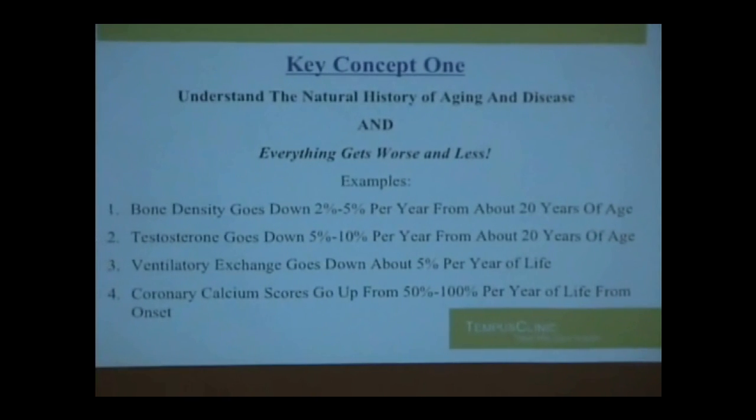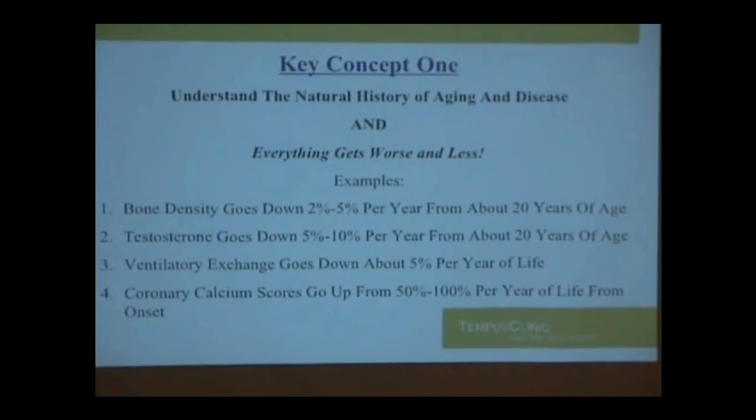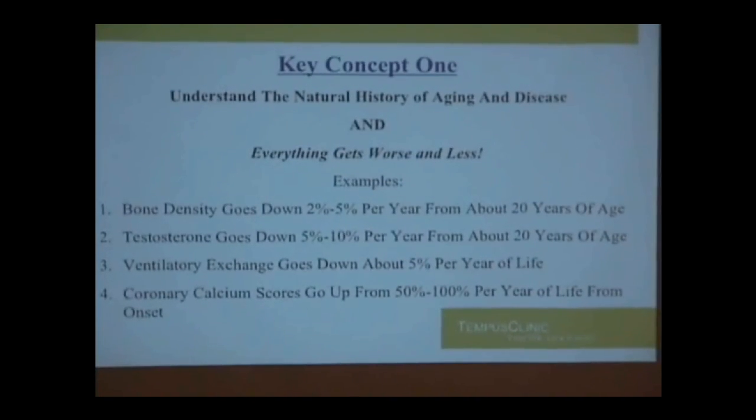The history of aging and disease: everything gets worse and less. Here's just some things. Bone density goes down two to five percent every single year from about 20. Testosterone goes down, and it's not simply related to sexual function - testosterone is an essential hormone of well-being for both men and women. Ventilatory exchange goes down five percent a year. When you're 20, 21, 22 years old, you can breathe. It's five percent less a year. It's life, it's all downhill.